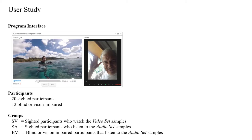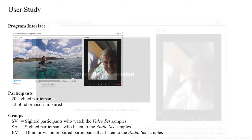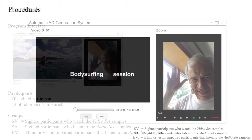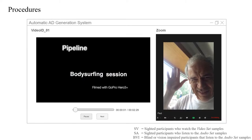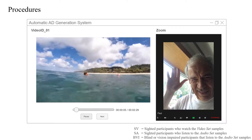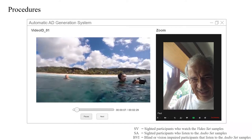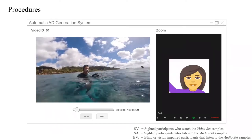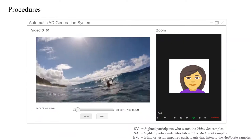We recruited 20 sighted participants and 12 blind or vision impaired participants and divided them into three groups. We ran our study in a two-pass manner. In the first pass, we asked participants to watch or listen to the original input data and raise their hand when they thought the current video needed additional descriptions to help understand the scene.